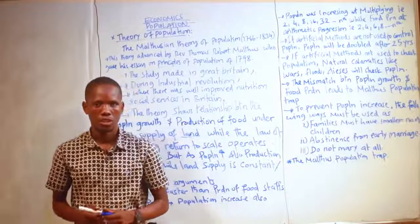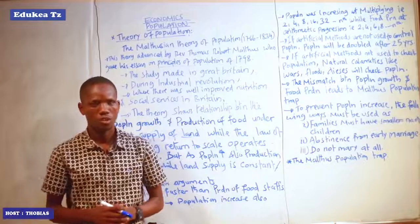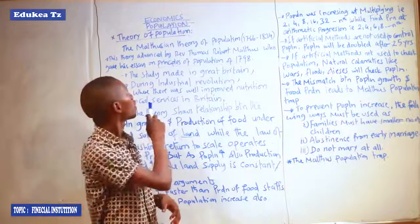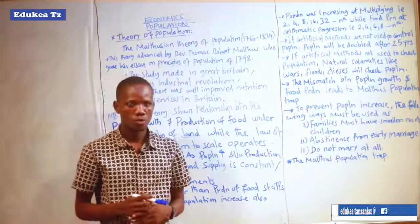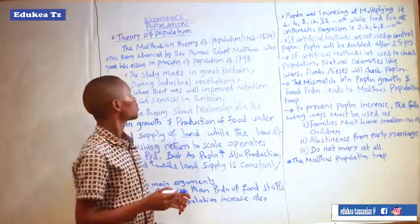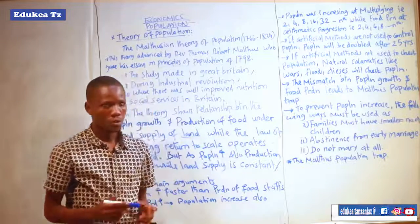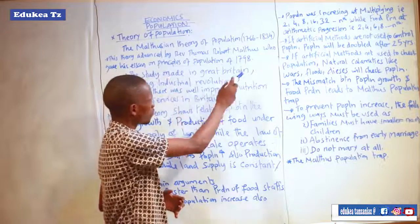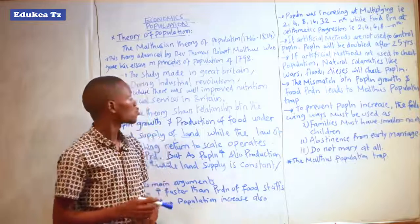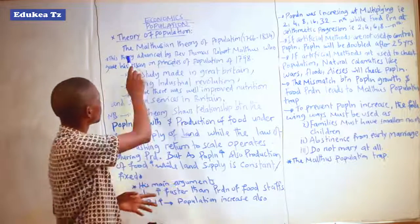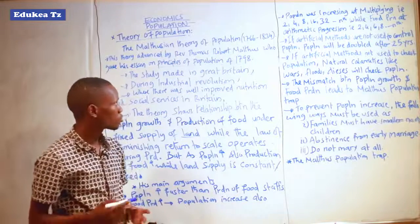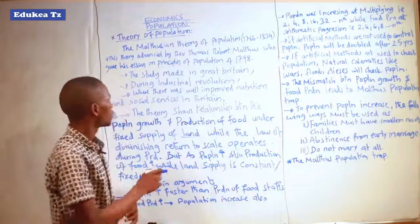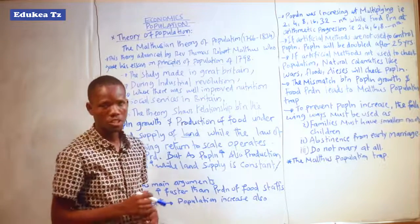Hello, welcome to our Educare company. I am Mr. Tobias, a teacher of economics, and I am here to continue with our topic on population. Today we are going to look at a sub-topic: the theory of population, specifically the theories written based on the principles of population of 1798. We are going to discuss the Malthusian theory of population, studied in Great Britain by Mr. Thomas Robert Malthus during the Industrial Revolution.